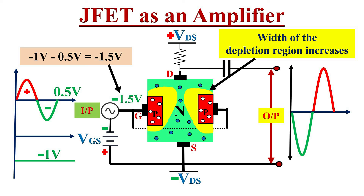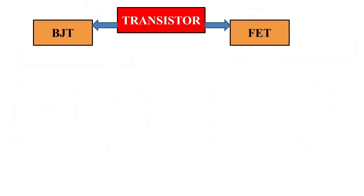It is seen that there is a phase inversion between the input signal and the output signal. Moreover, a small change in the reverse bias on the gate produces a large change in the drain current. This in fact makes JFET capable of raising the strength of a weak signal — in this way JFET acts as an amplifier.